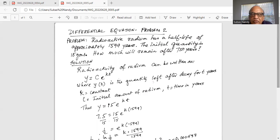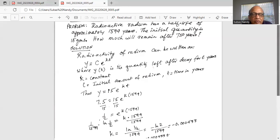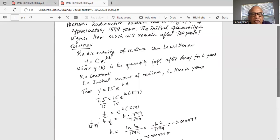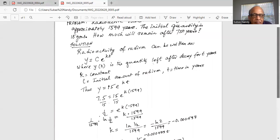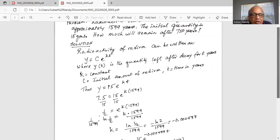We divide by 15 on both sides to get 7.5/15 = e^(k×1599). 7.5 divided by 15 is half, so 1/2 = e^(k×1599). If we take natural logarithm on both sides, we get ln(1/2) = k × 1599. Divide by 1599 on both sides.